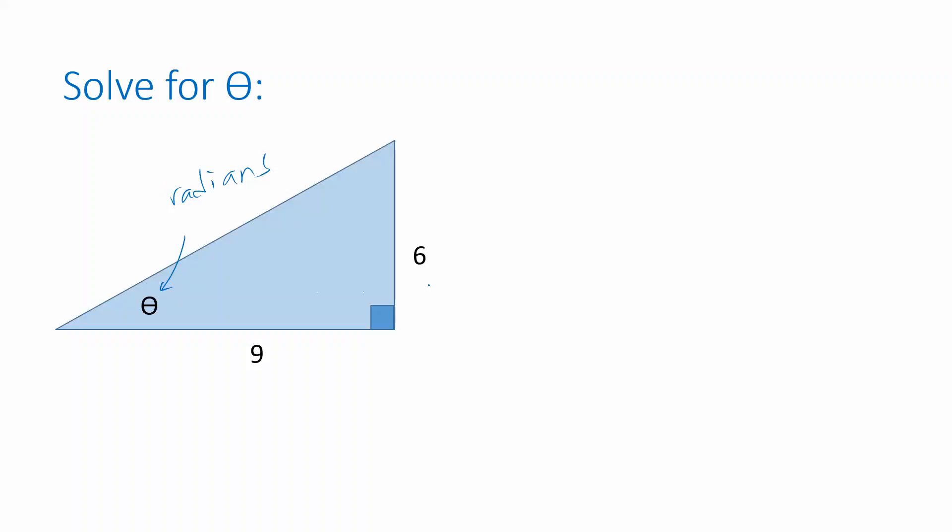What are we looking at in terms of the side lengths? This 6 is opposite the angle theta and this 9 is adjacent to the angle theta. Opposite and adjacent combine with the tangent function. The tangent of this angle theta should give me opposite over adjacent, which is 6 over 9, and that reduces to 2 thirds.